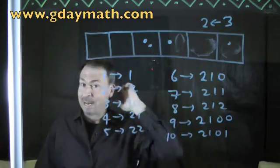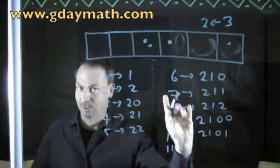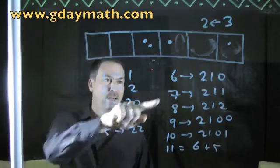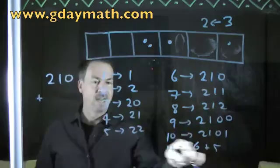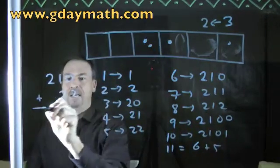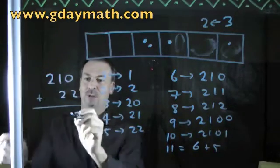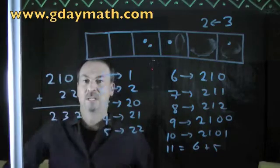In fact, I can maybe start playing with some structure. For example, eleven. Now, I know it's going to be two, one, zero, two. But what if I thought it was six plus five? Now, six I can look up. That's two, one, zero. And I add to that five, which is two, two. Can I just say the answer is going to be zero plus two is two. I'm just doing like grade school arithmetic on this. One plus two is three. And two and nothing is another two. So is the answer just two, three, two?